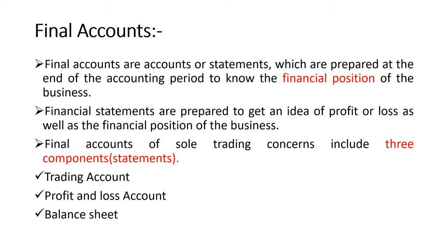First in accounting, we have to prepare a journal based on the transactions — different journal entries. Then after journal preparation, all those entries we have to transfer to separate ledger accounts. Then after that, all debit or credit balances we have to transfer to the trial balance. In the trial balance, all ledger balances are taken and it is prepared to know the financial accuracy of the business. Then after trial balance, we will be preparing final accounts. In order to prepare the final accounts, the trial balance is required. So here comes the meaning of final accounts.